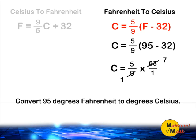And 9, of course, can be divided by itself one time. So, for the numerator, we have 5 times 7, which is 35. And for our denominator, we have 1 times 1, which is 1. And anything divided by 1 is itself, so 5/9 times 63 is 35.